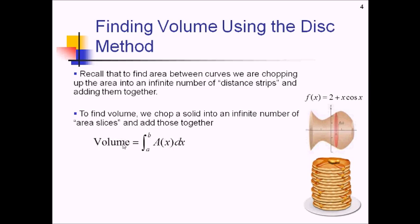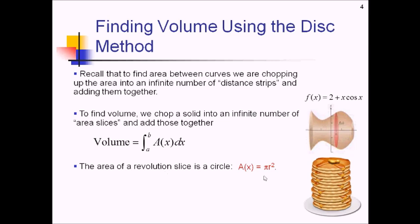In general, volume — since we're adding a bunch of things together — is going to be an integral along some interval of whatever your area is. Taking a look at our pancakes and our cross section, the area of a solid of revolution appears to be a circle. So we can use pi r squared and add all those pi r squareds together. The catch is that we have to express this formula in terms of x, because we're integrating in terms of x going horizontally, and we have this dx in here, so we need something with an x in it.